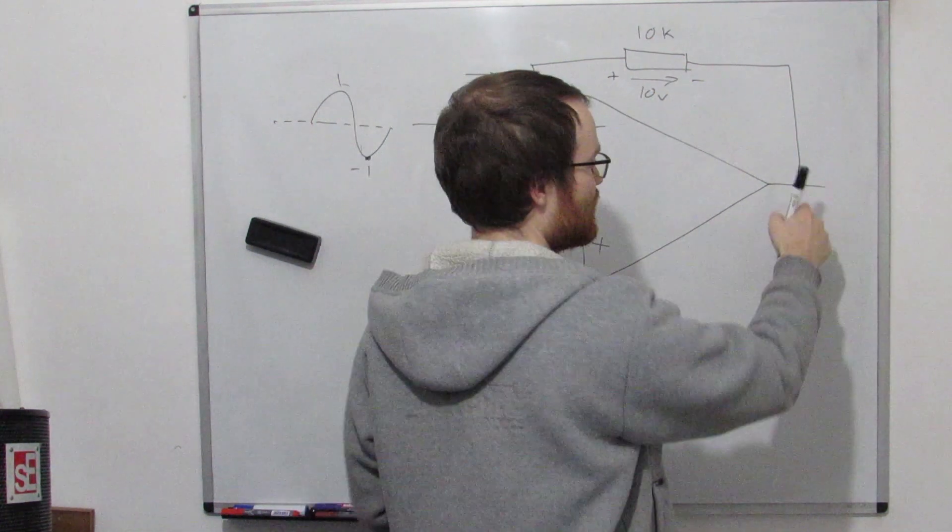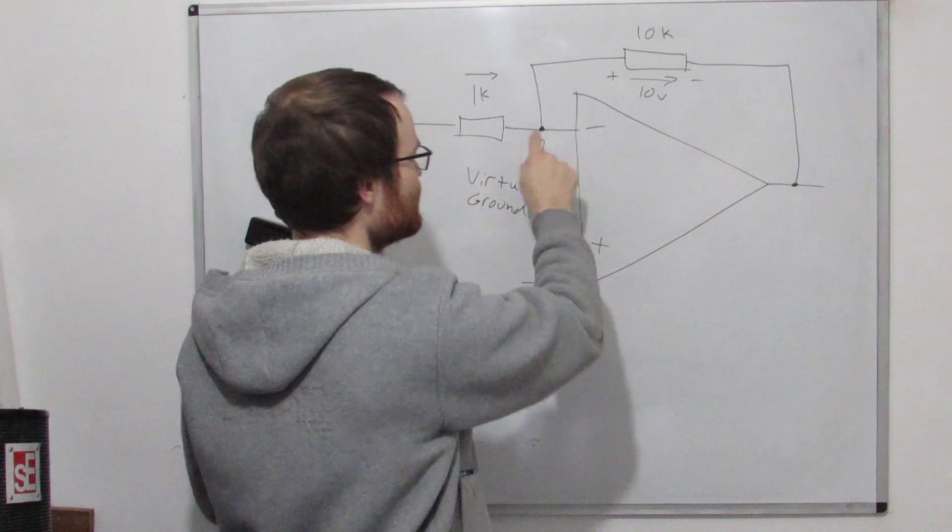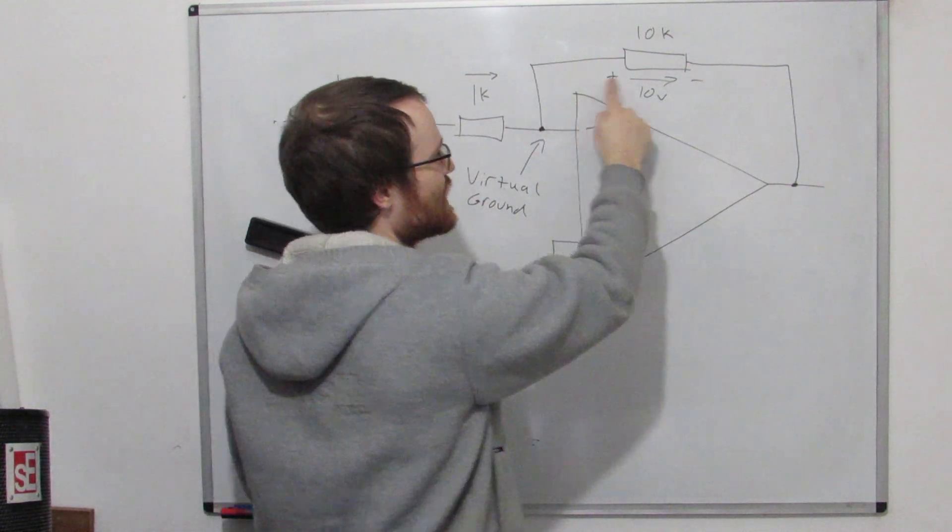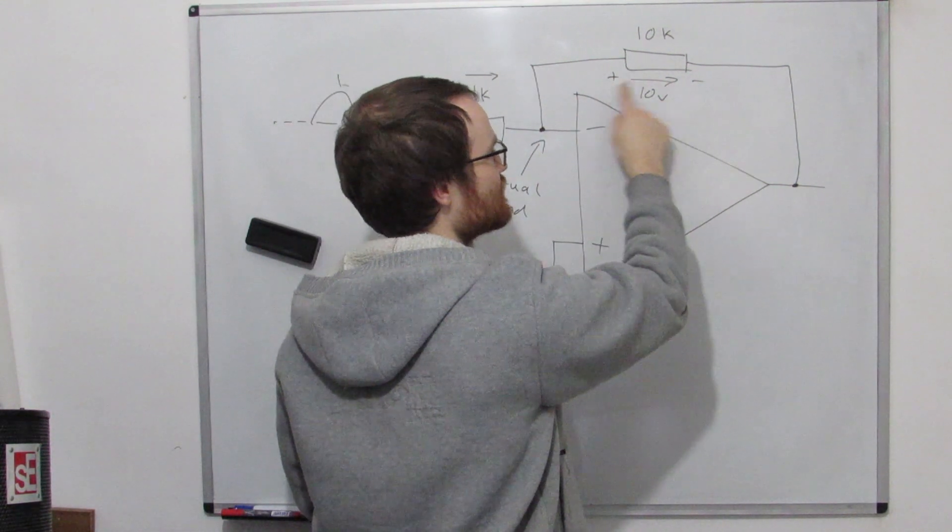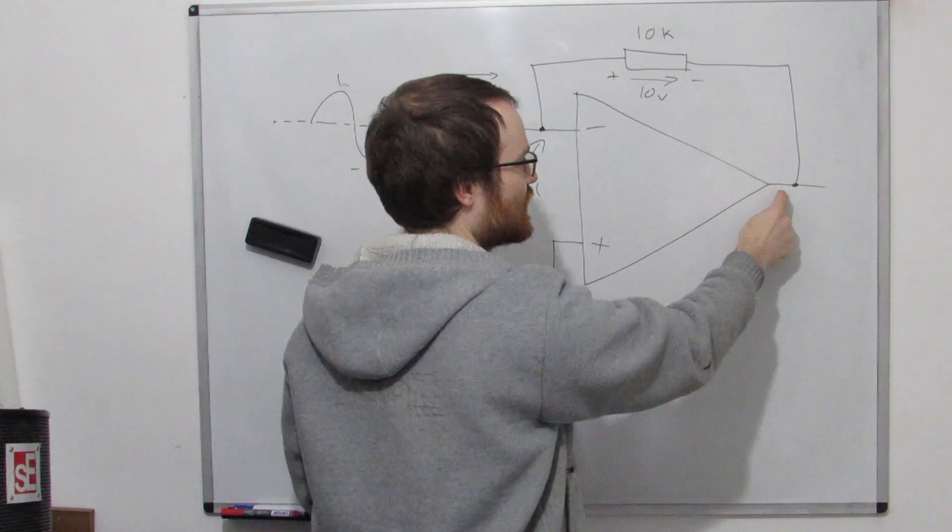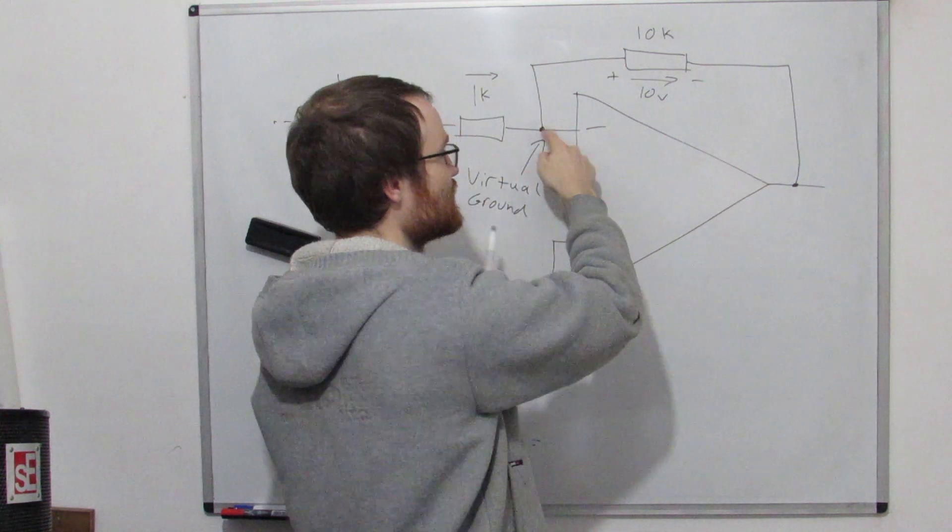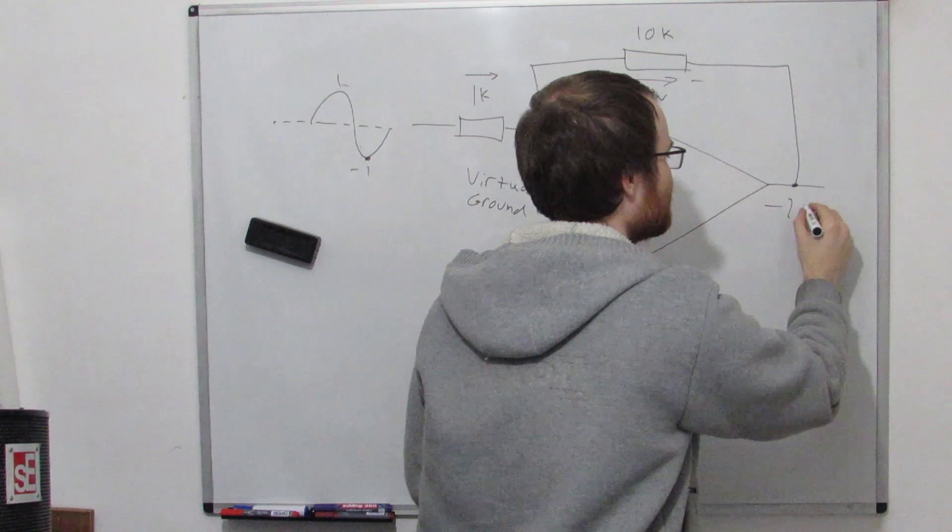And now if we've got current flowing this way, we've got a positive voltage drop in this direction, and one milliamp times 10k is 10 volts. So now we've got, as far as the output is concerned, if this point is ground and there's then a 10 volts voltage drop across this resistor, then that means that this point is 10 volts lower than this point. Now this is ground, so that's zero,